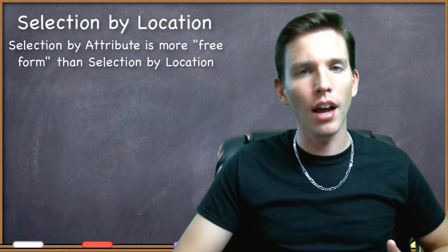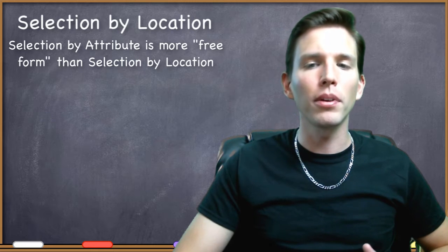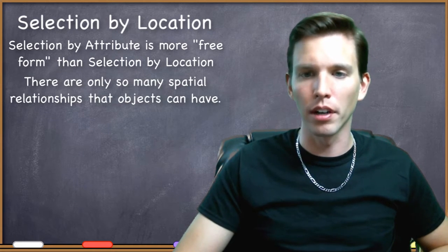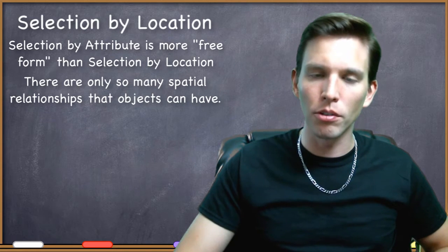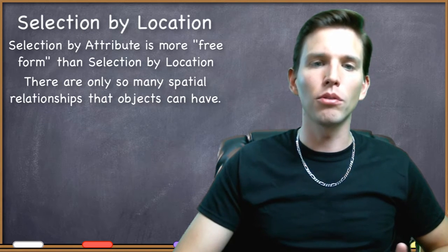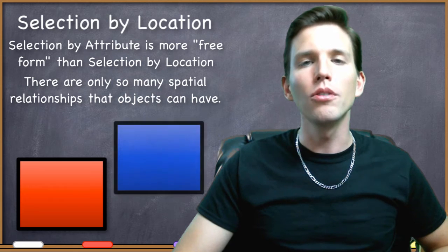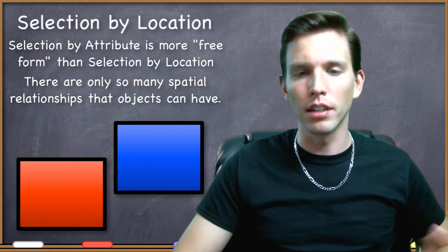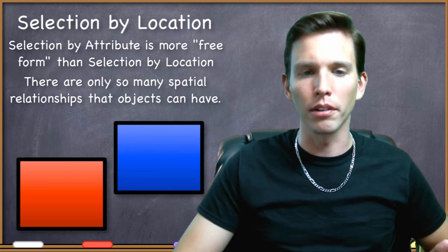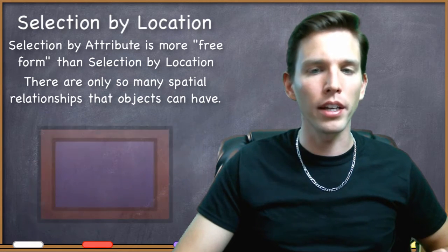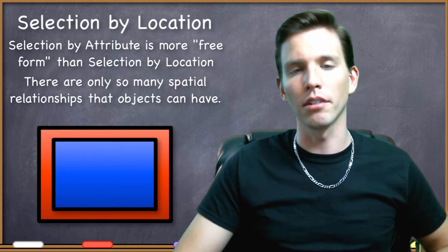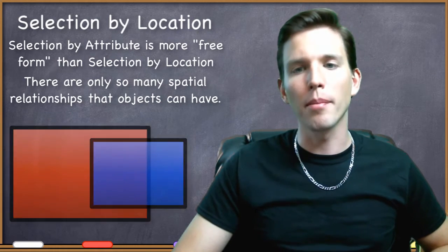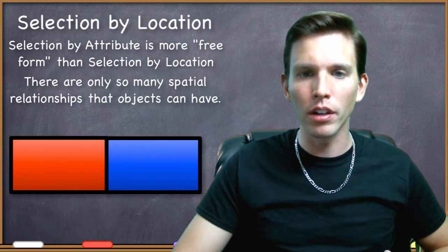Selection by location is not nearly as freeform, and that's because there are only so many spatial relationships that objects can have with one another. Think about objects in two-dimensional space. If I give you two polygons, you could probably list every possible spatial relationship that these two polygons could have with one another. You might say that one polygon could be inside the other. You could say that these polygons could overlap. They might touch each other only along an edge.